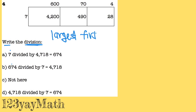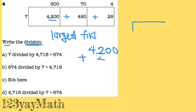So we have this — it's the partial product, so you need to add this plus this plus this, and we're going to place it inside our division box. So take the time to write it using the correct place value: 4,200 plus 490.